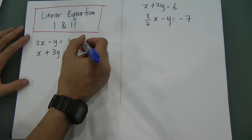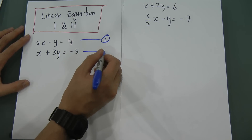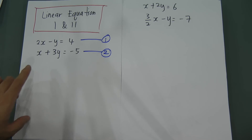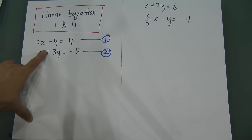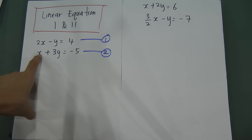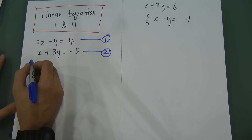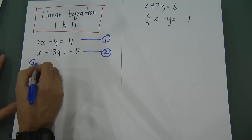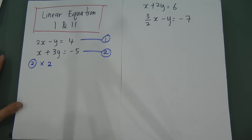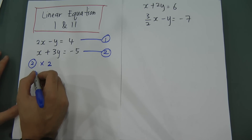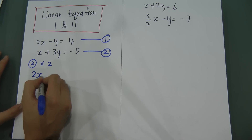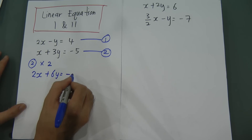I let this be the first equation and this be the second equation. In order to make the x become 2x, I have to multiply the whole equation by 2. So I multiply 2 for the second equation, and what I get is 2x plus 6y equal to negative 10.